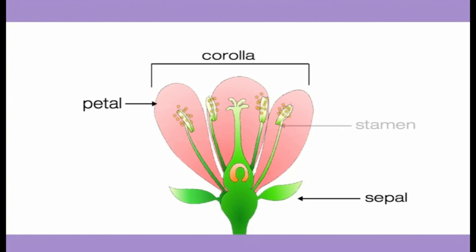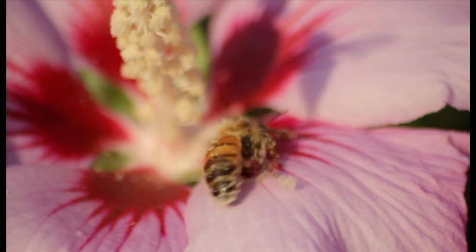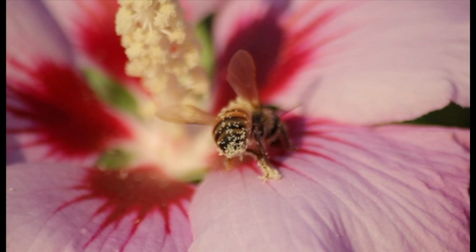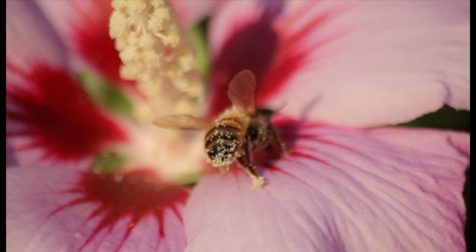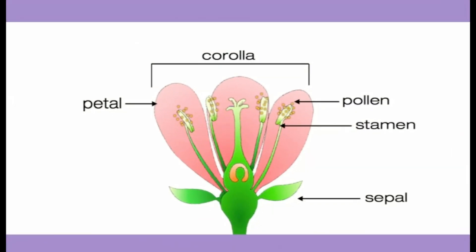The little stalks that stick up are called the stamen. The stamen produces and holds little grains of golden dust called pollen. Pollen contains cells that are very important in the reproduction of flowering plants.